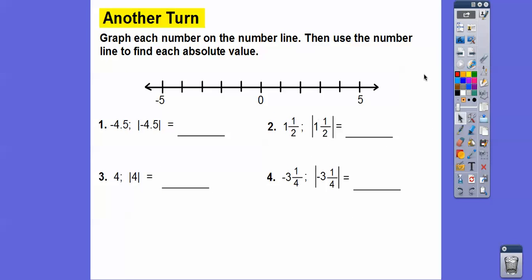Let's graph each number on the number line and find the absolute value, which just means find the distance. Absolute value just chops off the negative. The absolute value of negative 4.5 is 4.5 — we graph it right at negative 4.5. For 1 and 1 half, we graph it at 1.5; it's 1.5 away from zero, so its absolute value is 1 and 1 half. The absolute value of 4 is 4. The absolute value of negative 3 and 1 fourth is 3 and 1 fourth — there's negative 3 and 1 fourth on the number line.